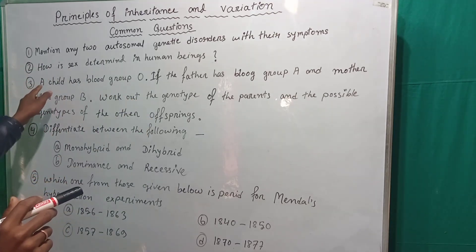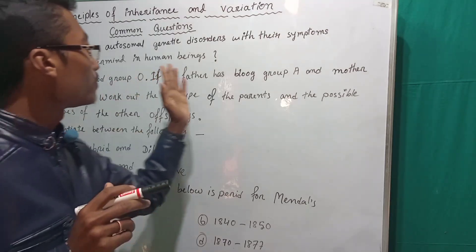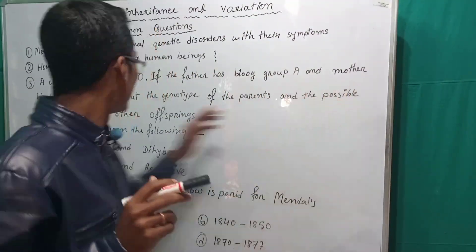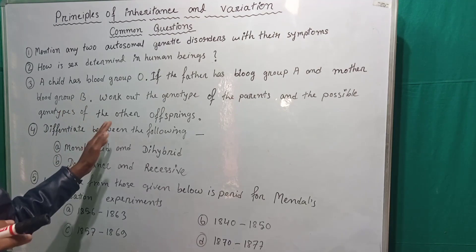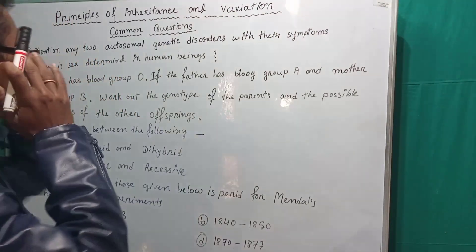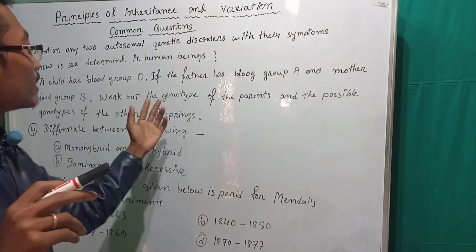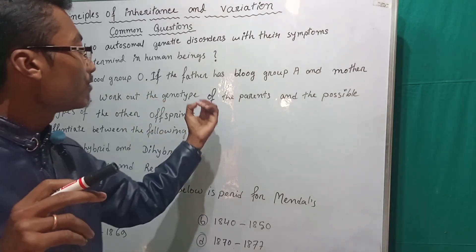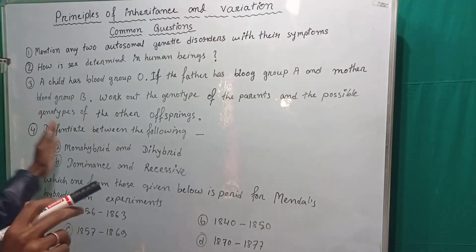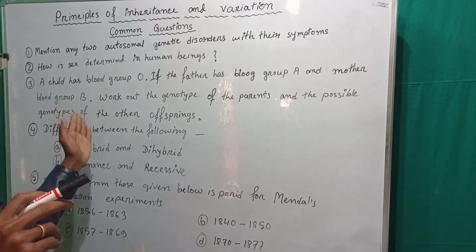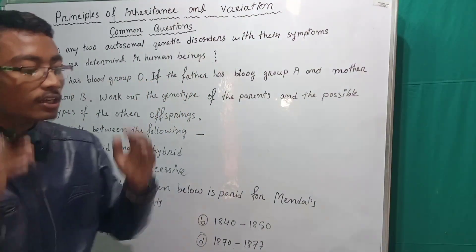Question number two: A child has blood group O. If the father has blood group A and the mother has blood group B, work out the genotype of the parents and the possible genotypes of the other offspring.